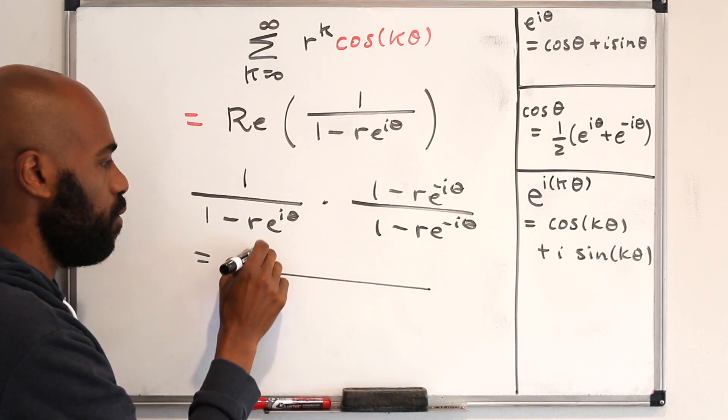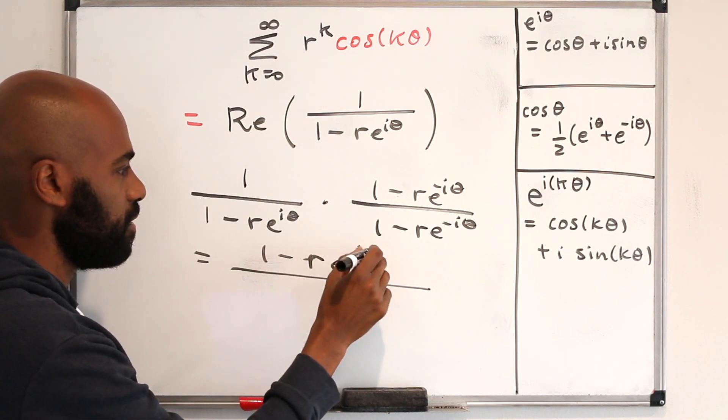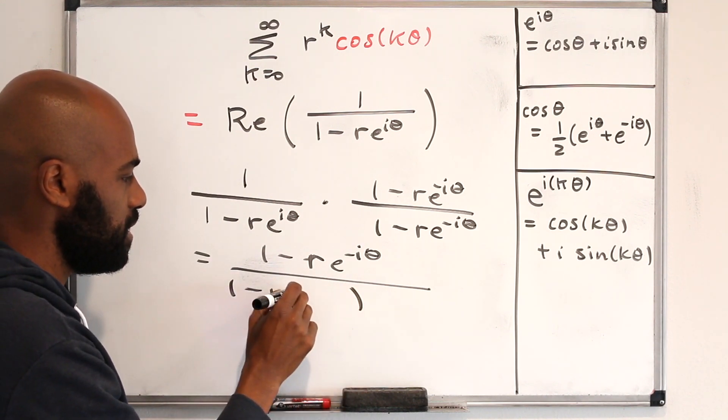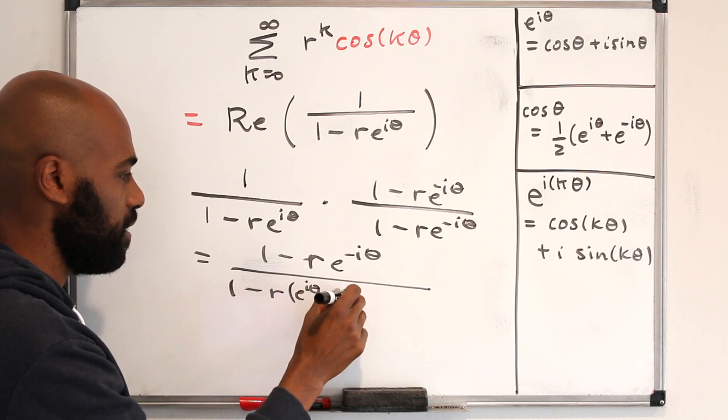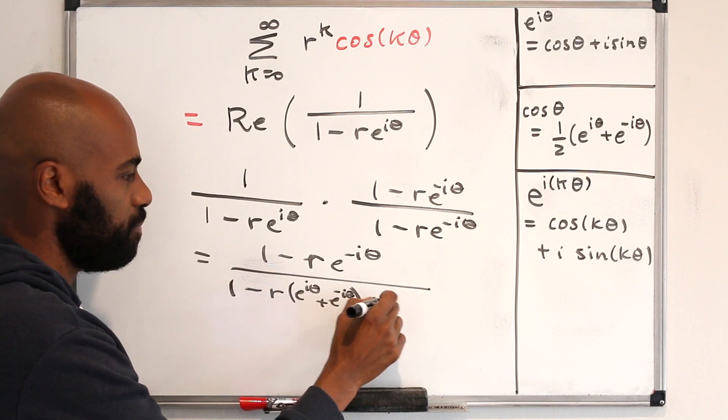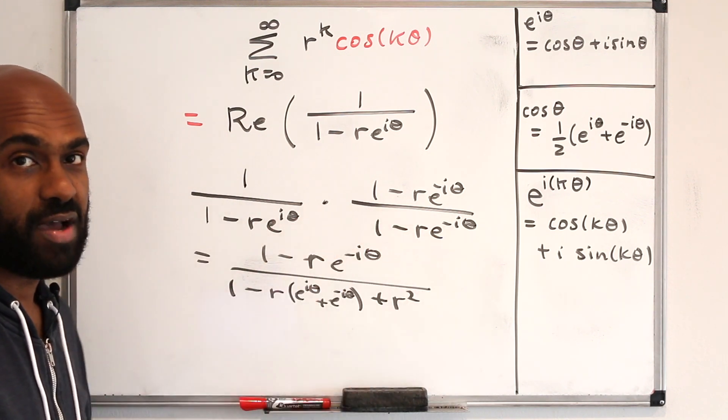So multiplying these, we get 1 minus r e to the negative i theta, and in the denominator we have 1 minus r times e to the i theta plus e to the negative i theta, because we have two negative r's here, and then plus r squared times e to the i theta times e to the negative i theta, but that's 1.